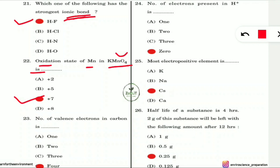Question 23: How many valence electrons does carbon have? Carbon has four valence electrons, which is why it is called tetravalent — it has tetravalency.